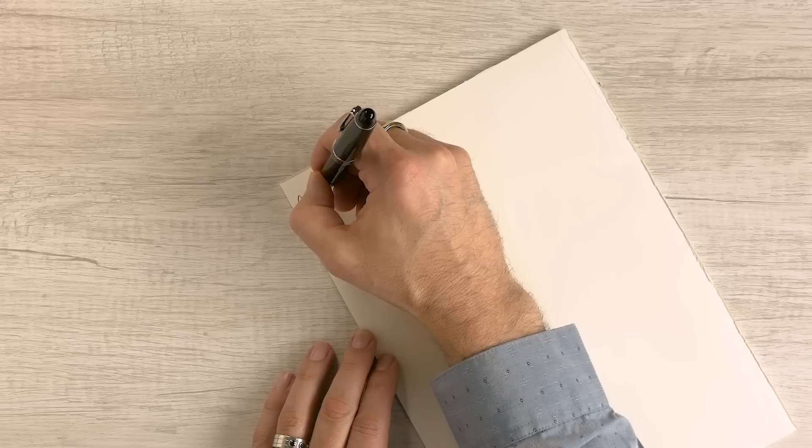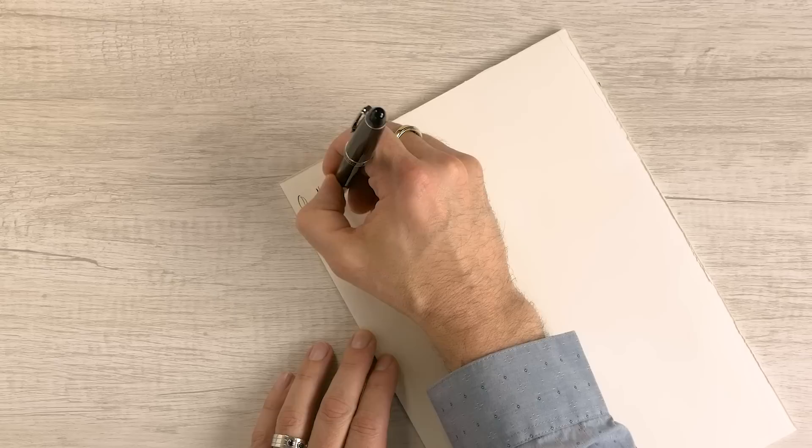Okay, so let's do a writing sample of all the nibs and we'll look at each one individually. So this is the Naginata Togi medium fine. This is the rhodium trim version. Now the Naginata Togi will give you a different angle the higher you hold it up. So similar to a zoom, but in an upright fashion, it will be much thinner. So you can see how fine that is.